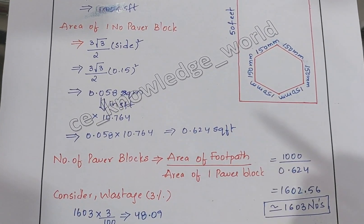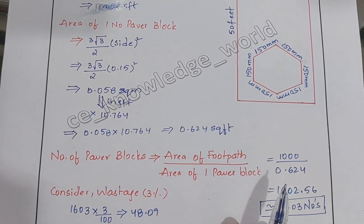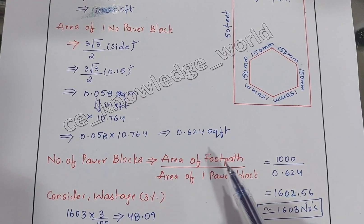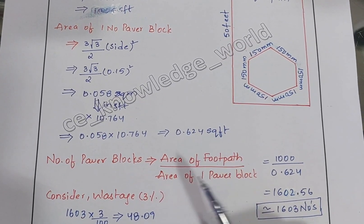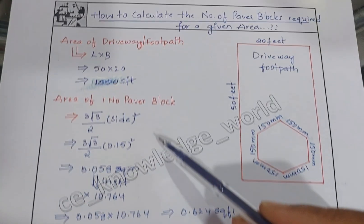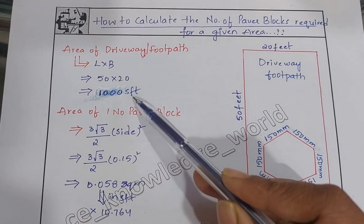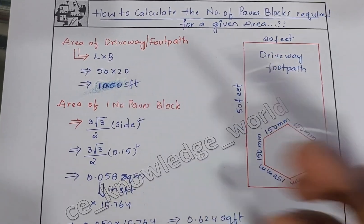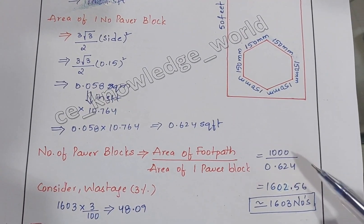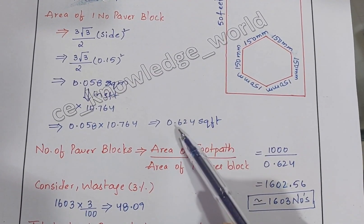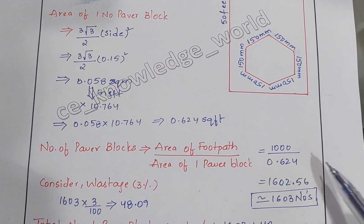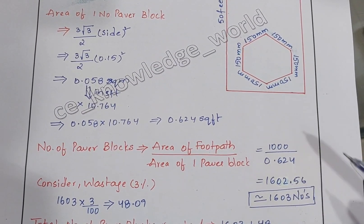Now we calculate how many paper blocks are required for this area. The formula is: area of footpath or driveway divided by area of one paper block. The area of the footpath is 1000 square feet, and the area of one paper block is 0.624 square feet. So we compute 1000 divided by 0.624.